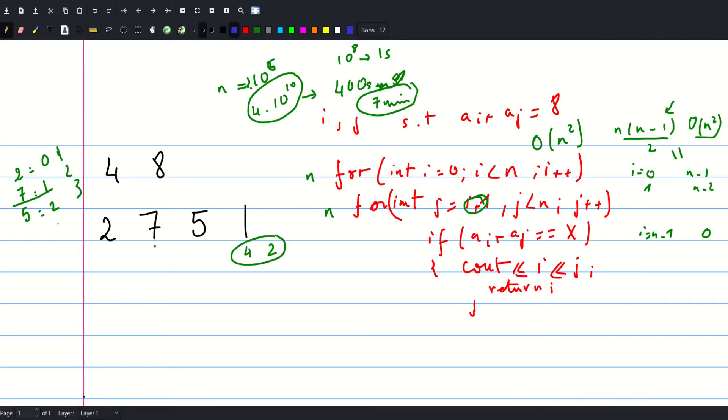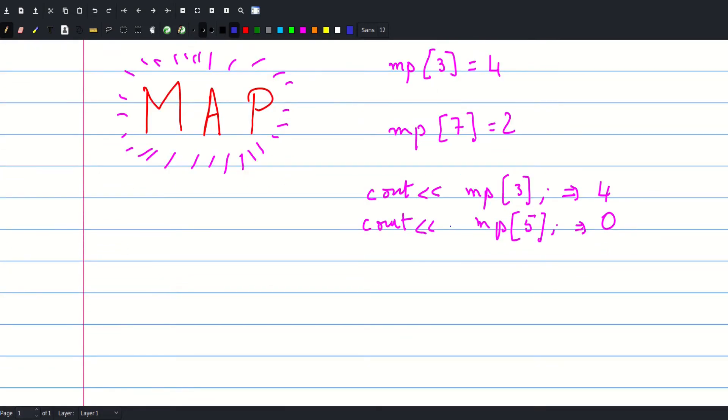But what data structure would allow us to do something like this? And the answer is a map would allow us to do this. So what does a map do? A map acts like some kind of vector of a non-defined size. So you just declare a map of something like this, and you specify two types that are gonna get mapped to each other. Like in our case we're gonna map a value to a position. So both of these should be ints. So we would declare a map this way. And then we would say that the map mp of 3 is 4.